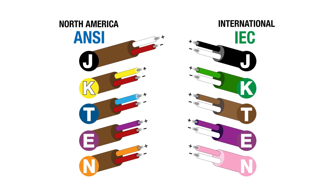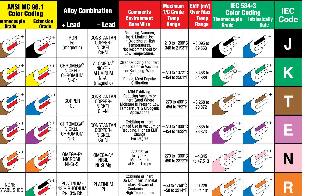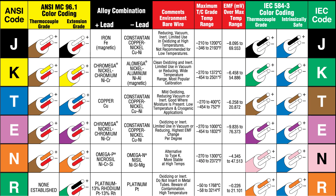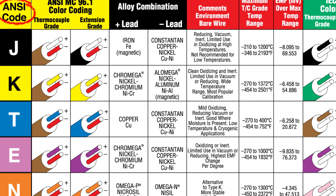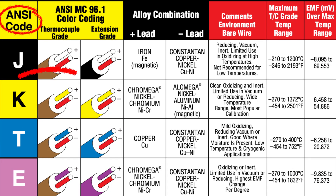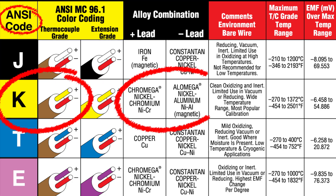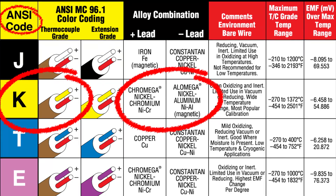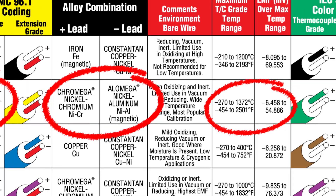If the thermocouple has both red and white wires, it will be the ANSI code for J-type. Once you've identified which color code your thermocouple is compliant with — ANSI or IEC — you can then identify the thermocouple's type or alloy combination, thus identifying its calibrated temperature range.